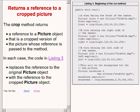The crop method returns a reference to a picture object that is a cropped version of the picture whose reference is passed to the method. In each case, the code on your right replaces the reference to the original picture object with the reference to the cropped picture object.